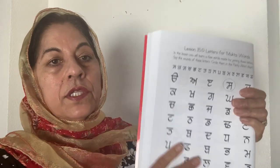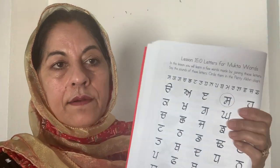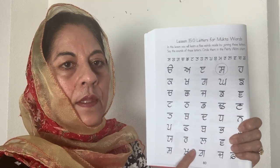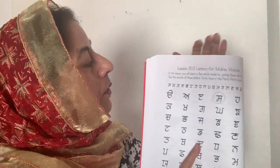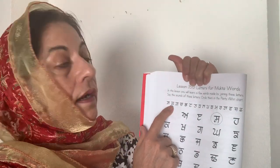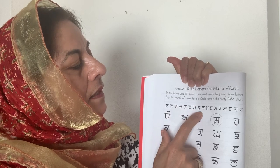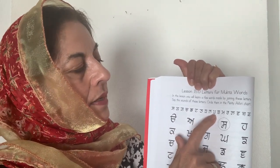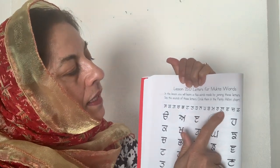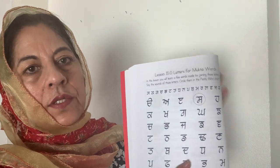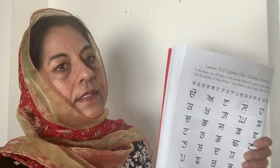In every lesson, we will only do a few words and make words with only a few letters. These are the letters. You will read them, say their sound, and you will circle them in the page. Then we will make the words. Pause the video and circle all of these, saying the letter name and saying the sound of it.